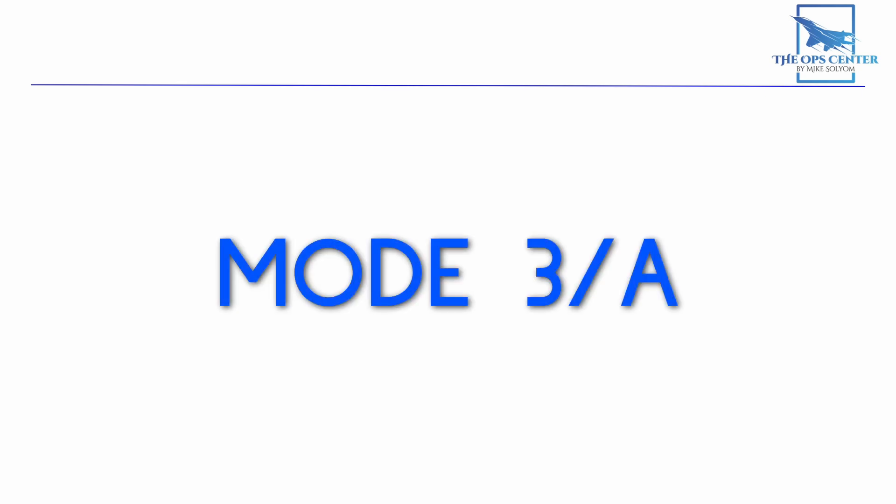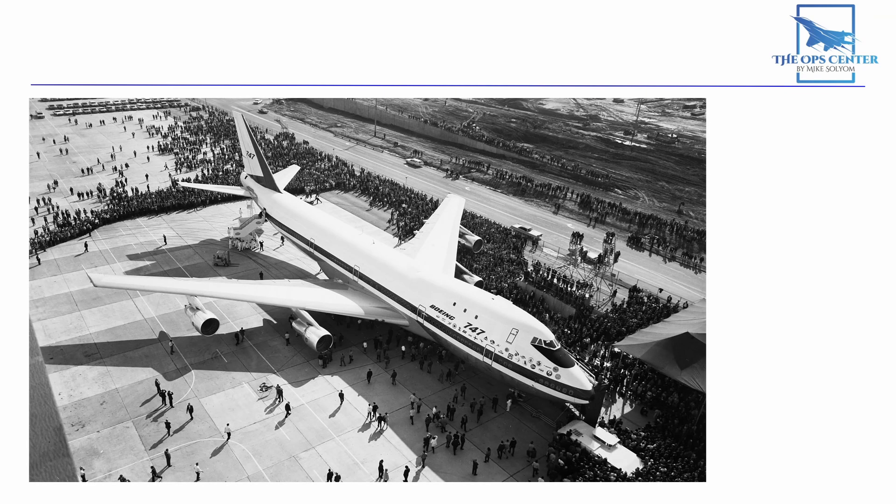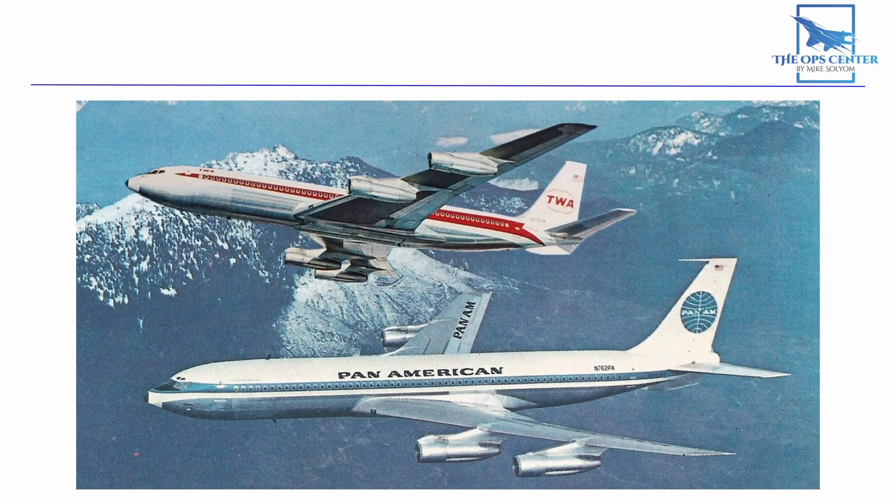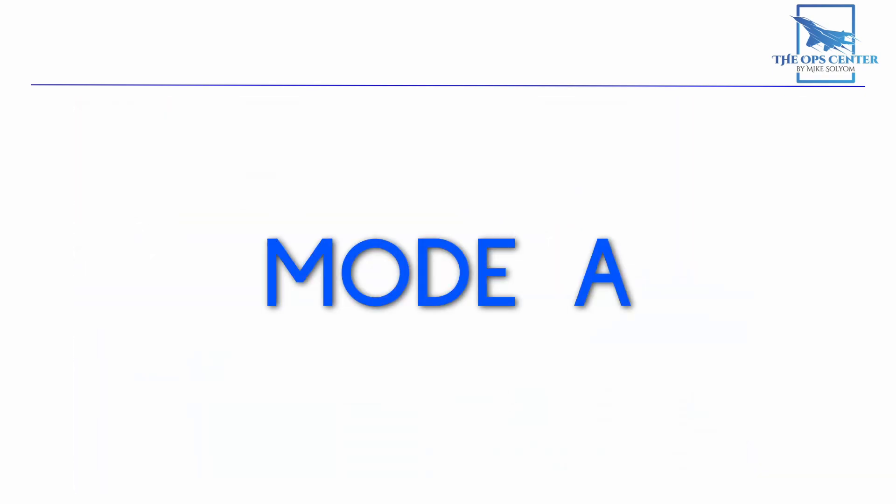You'll often hear mode 3 IFF referred to as mode 3A. This has to do with the revolution in air travel that happened in the late 1950s and early 1960s. With the influx of new civilian aircraft into the world's airspace, ATCs needed an efficient way to tell aircraft apart from each other. The military's IFF system proved to be an ideal way to do this. So the system was adopted and given its own naming system, starting with mode A. The system was used as is, right out of the box, which is why the military mode 3 and civil mode A are exactly the same.